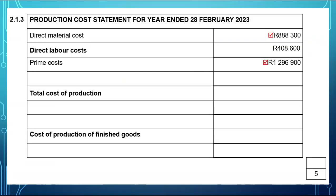To prime costs, you will add factory overheads. I've just shown you factory overheads which amounted to $570,650. It will give you your total cost of production, which will be $1,867,550.